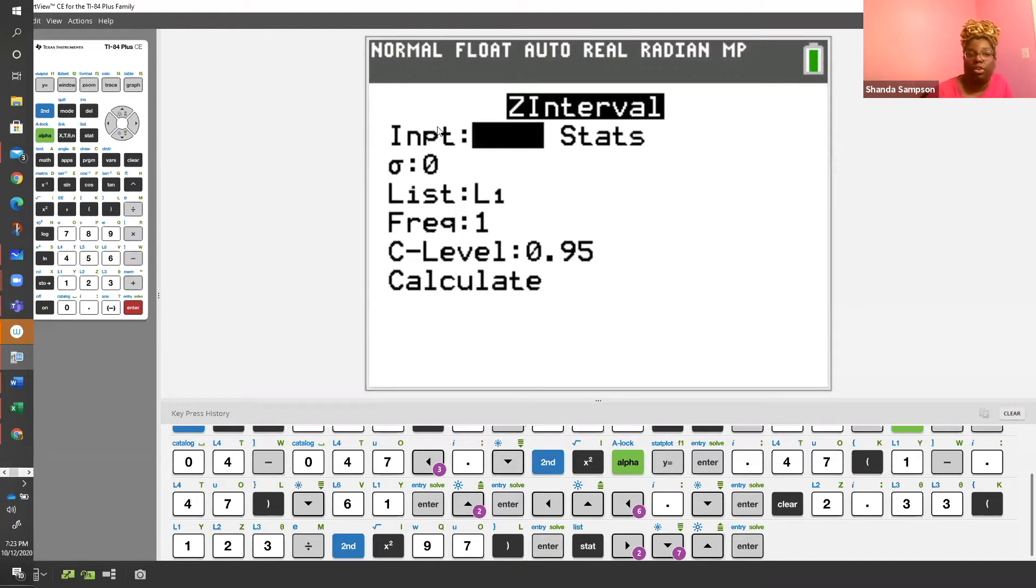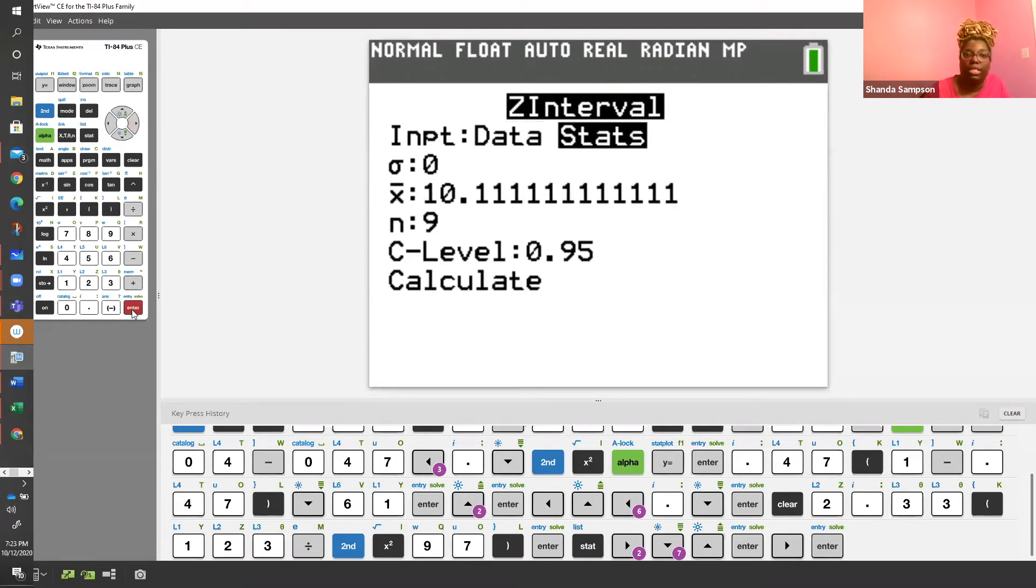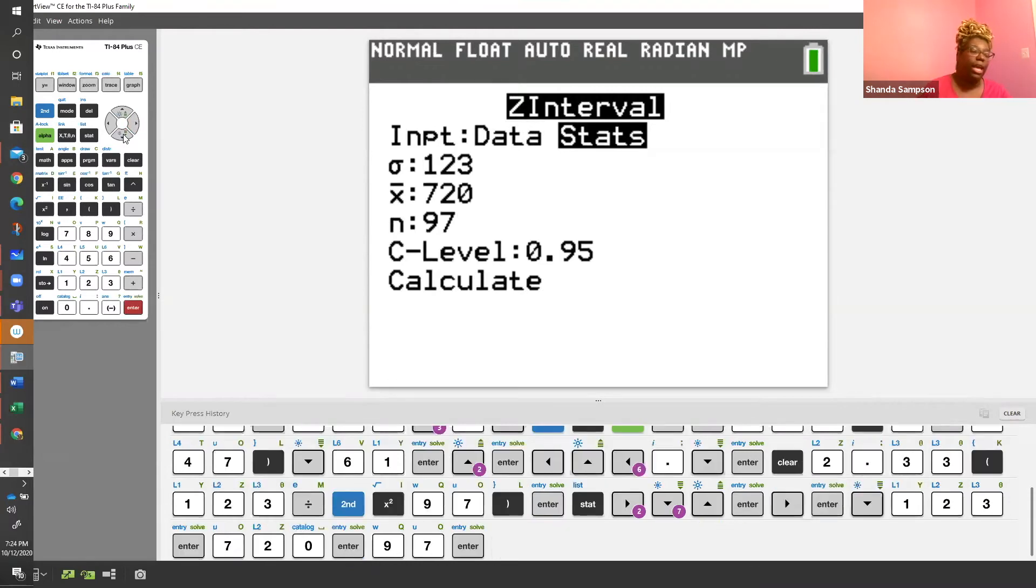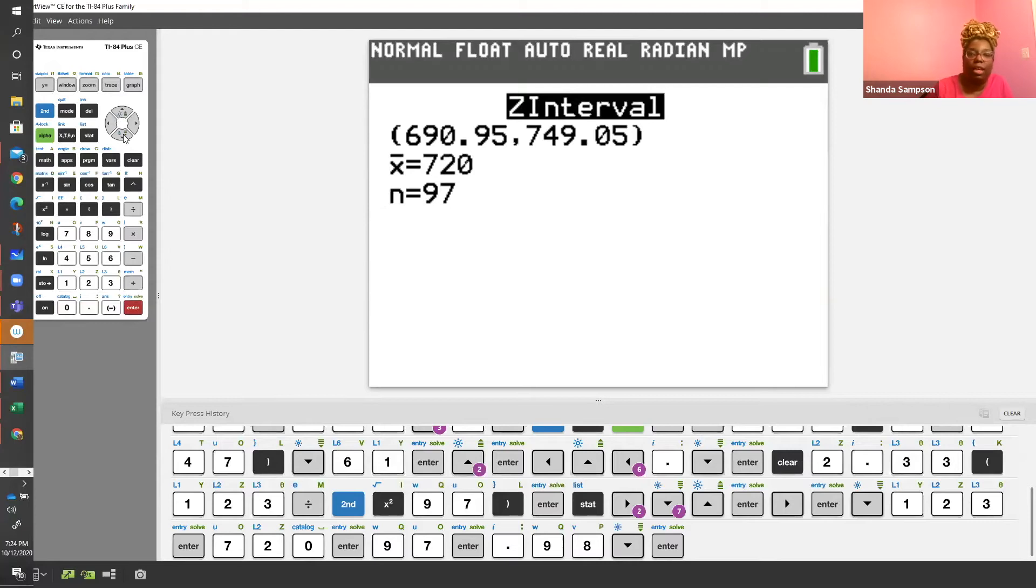Once you hit that, you need to decide, did you use data or did you use statistics? We didn't use data, we don't have anything in L1 or L2, but we were given all of the statistics. So we're going to hit enter on statistics and then we're going to put in our numbers. Our level of confidence was 98%, make sure you turn that into 0.98 and then you hit enter. You get 690.95 and you get 749.05.